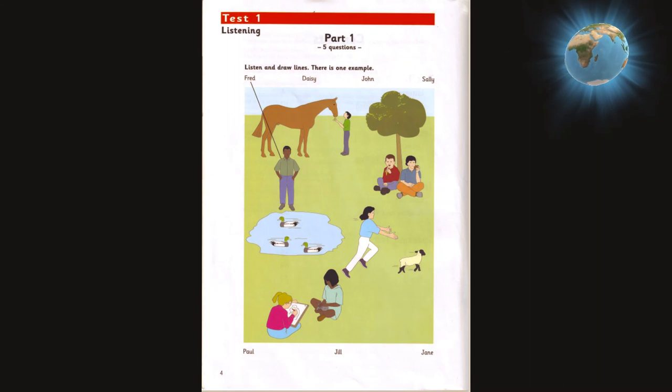Where's Paul? He's sitting under the tree with his friend. There are two boys under the tree. Which one is Paul? He's eating a banana. Oh, yes. I can see him now.